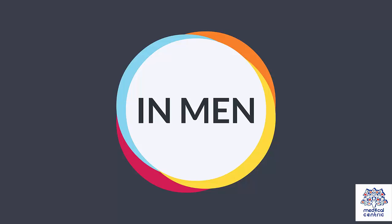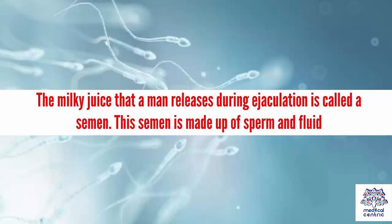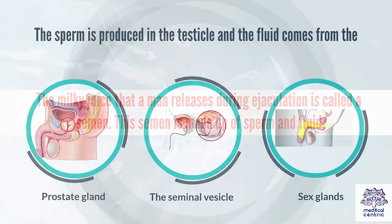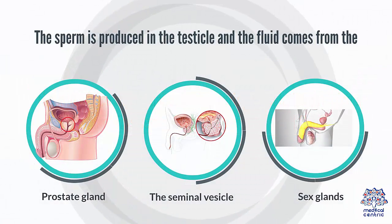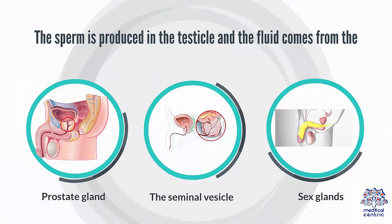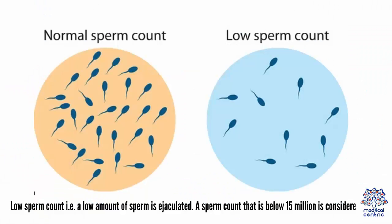Causes in men: The milky fluid that a man releases during ejaculation is called semen. This semen is made up of sperm and fluid. The sperm is produced in the testicle and the fluid comes from the prostate gland, the seminal vesicle, and some other sex glands. Infertility in men arises when there is low sperm count — a sperm count below 15 million is considered low.